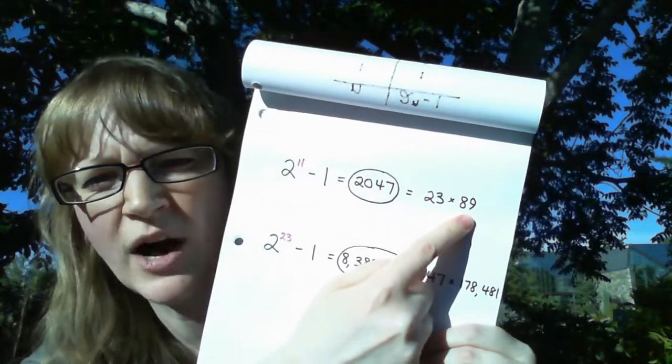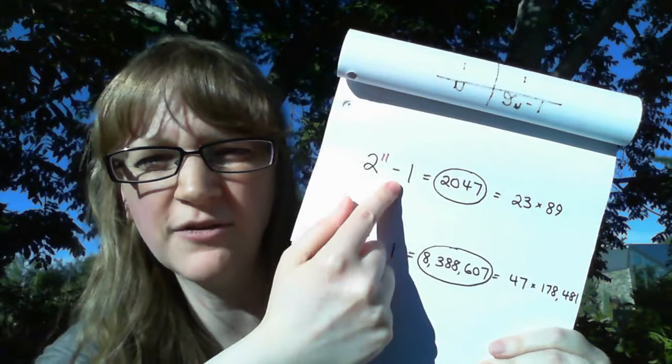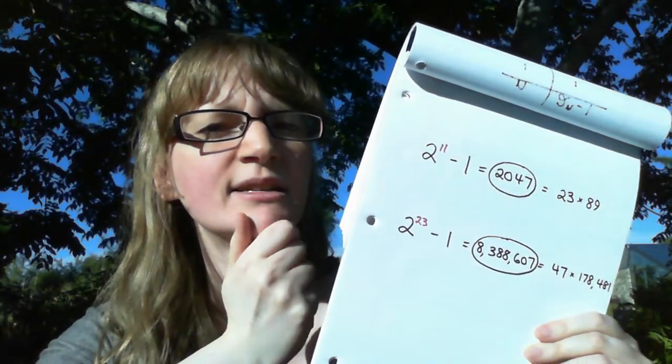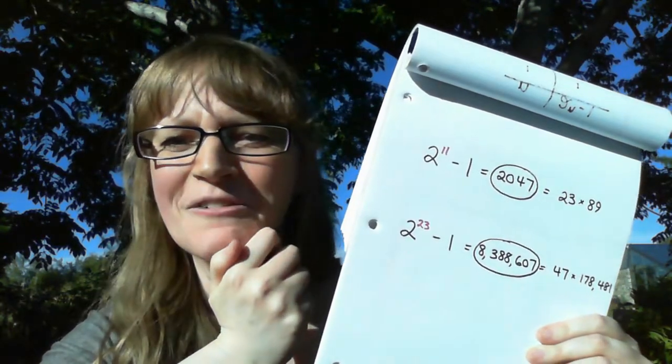What if we subtract one from 89? Yeah, we get 88. That's a multiple of 11. Subtracting one from a factor seems to play a part. It seems to be a factor.